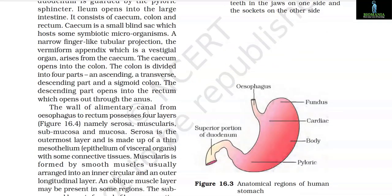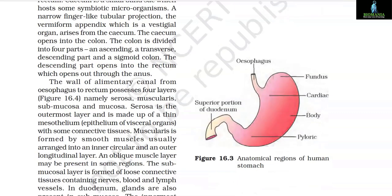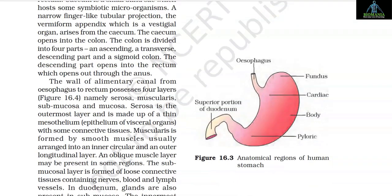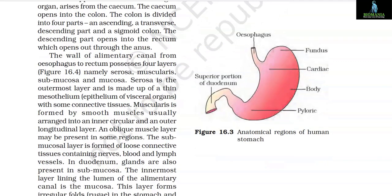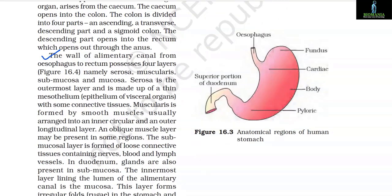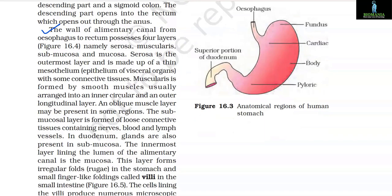The cecum opens into the colon, which is divided into 4 parts: an ascending, a transverse, descending part and a sigmoid colon. The descending part opens into the rectum which opens out through the anus. The wall of the alimentary canal from oesophagus to rectum possesses 4 layers, namely serosa, muscularis, submucosa and mucosa.